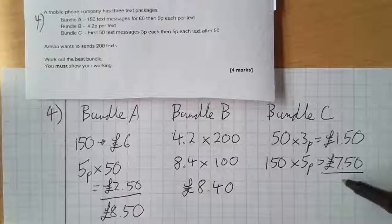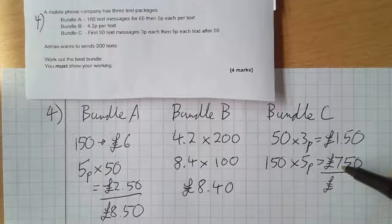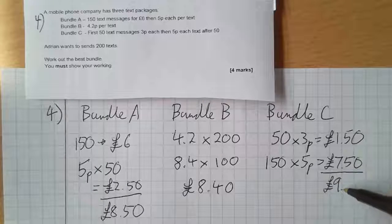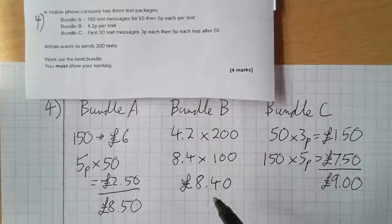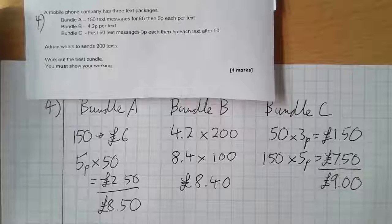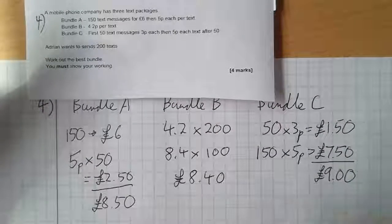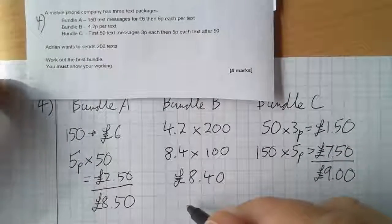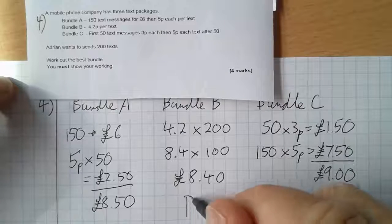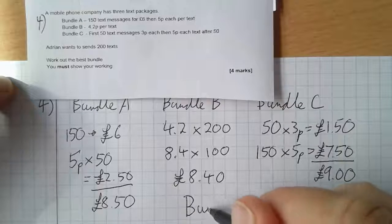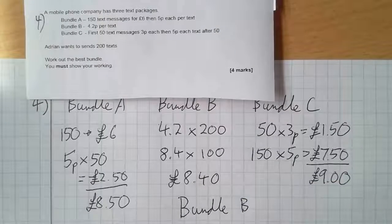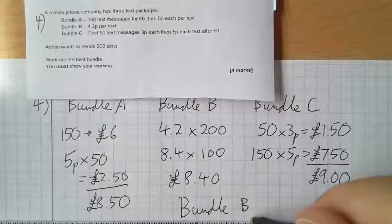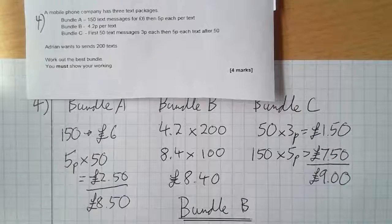So the total price here is going to come to £9. So I can now say which one's definitely cheapest - it's this one. So I need to then get the last mark by answering the question: which one's the best bundle? I've shown my working. The best bundle is Bundle B. And that's the end of your assessment.